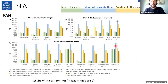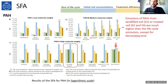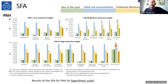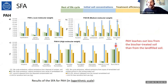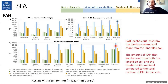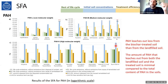For PAHs, we had more consistent results. The emissions of PAH from landfill soil or treated soil are much higher than the life cycle emissions, except for benzo[a]pyrene. However, PAH leaches out less from the biochar-treated soil than from the landfill soil, and when comparing the two, the performance of the biochar-treated soil is much, much better — only a small amount leaches out from the biochar-treated soil.